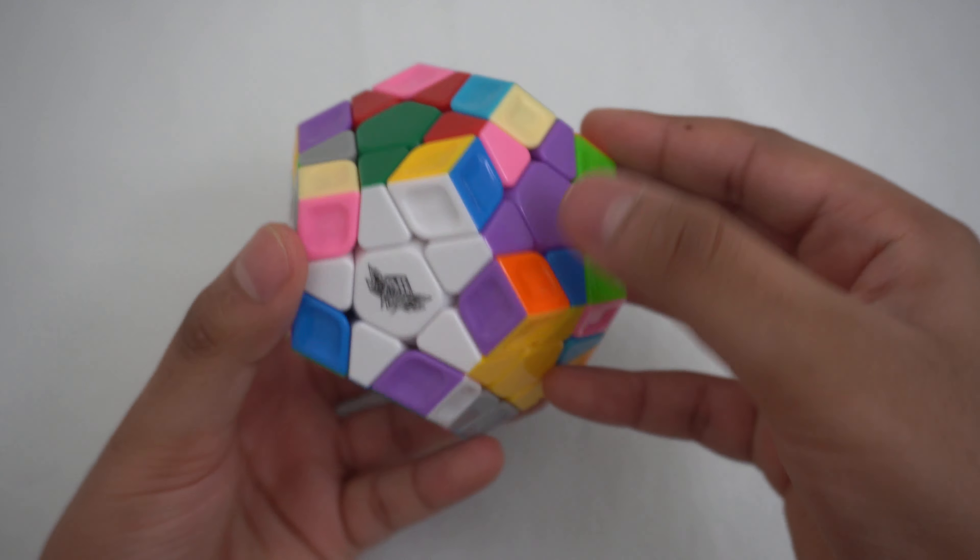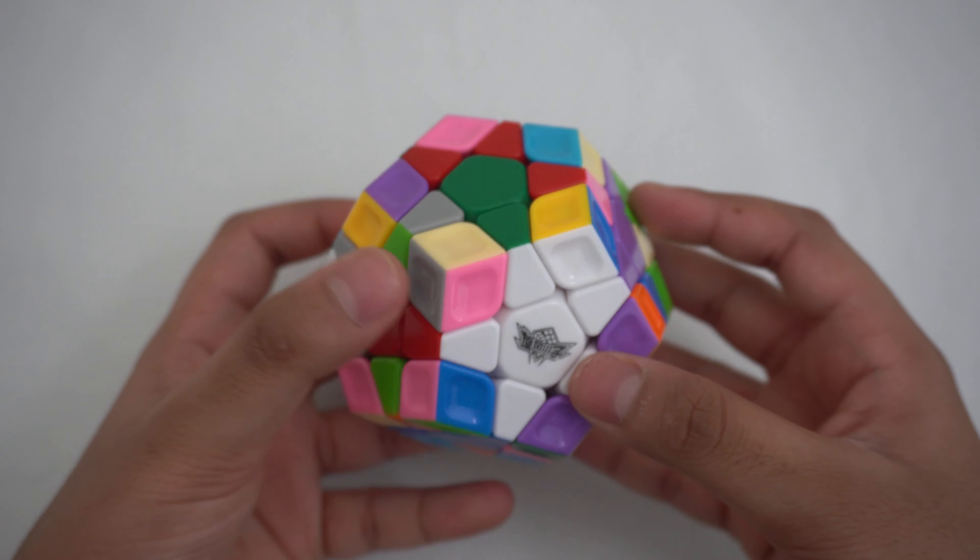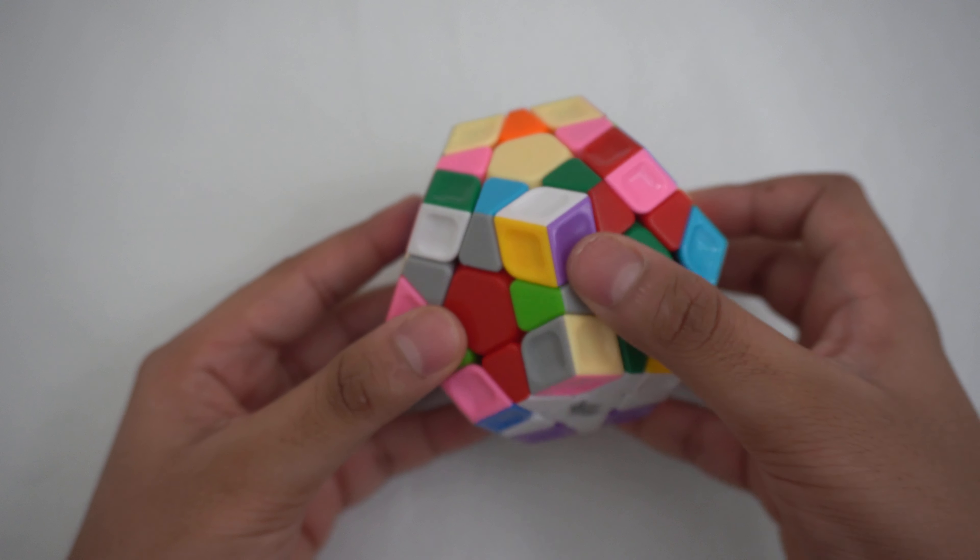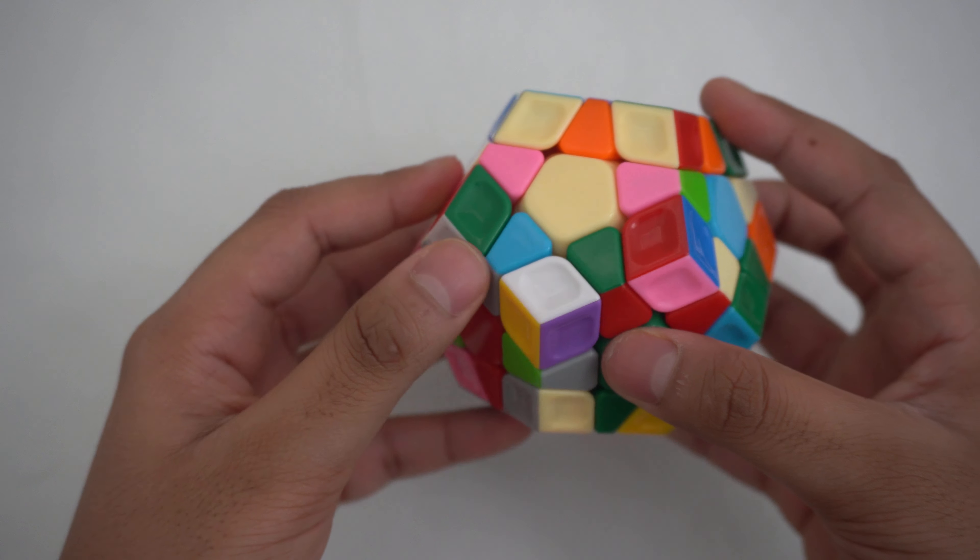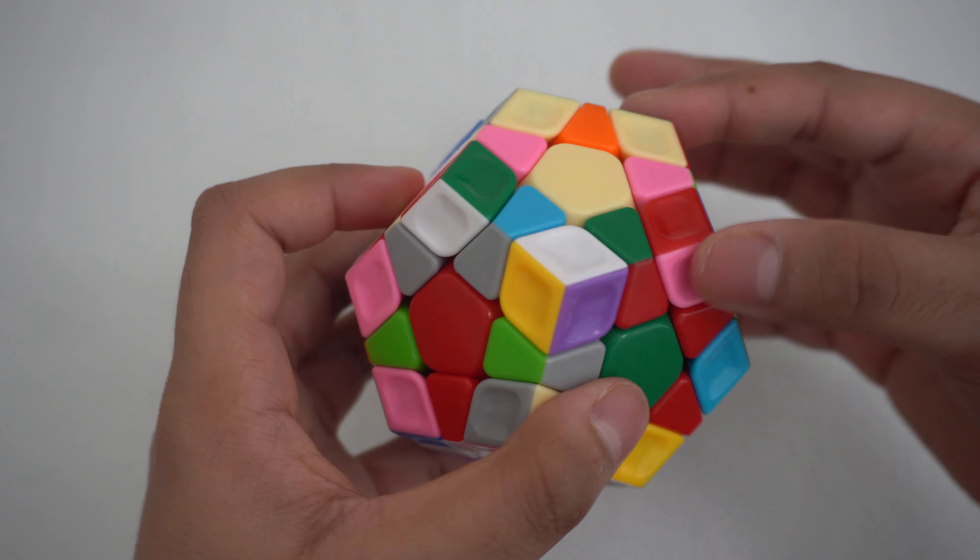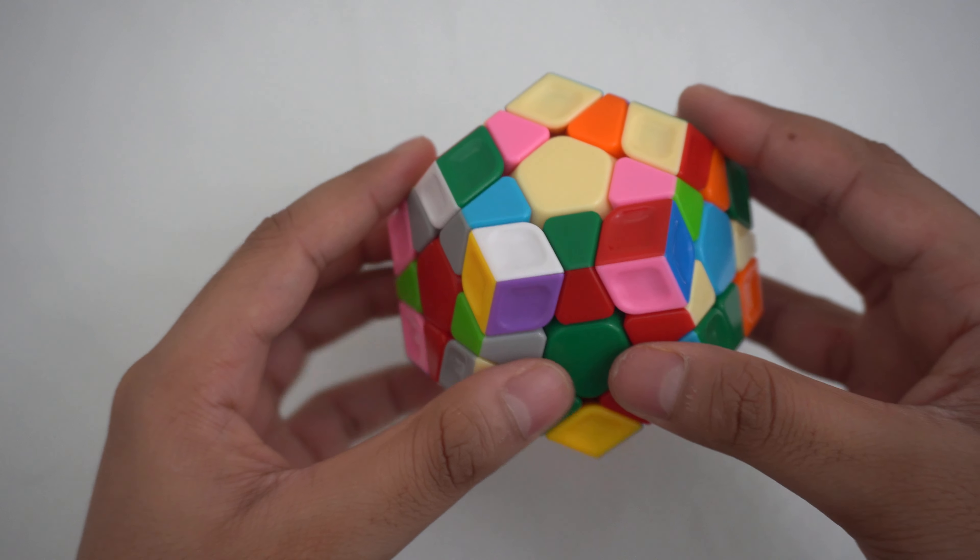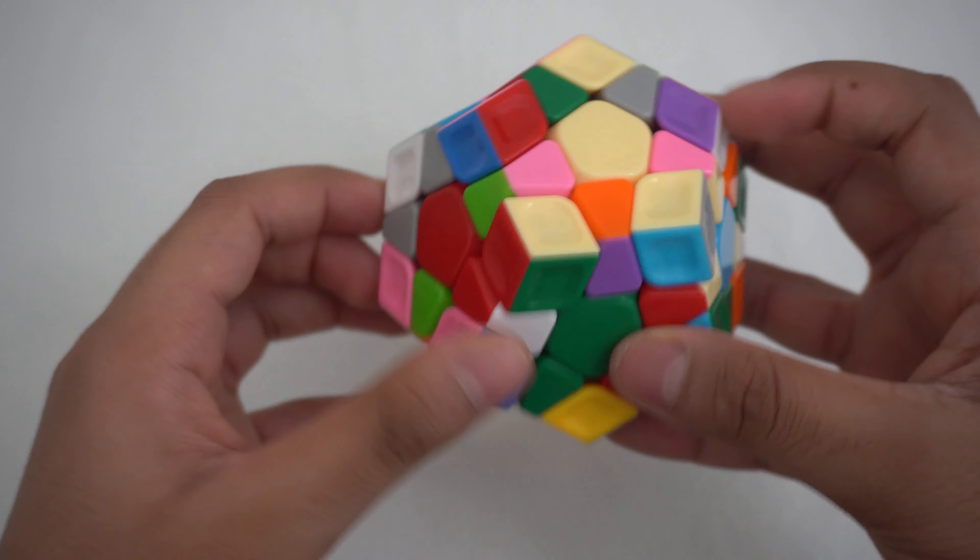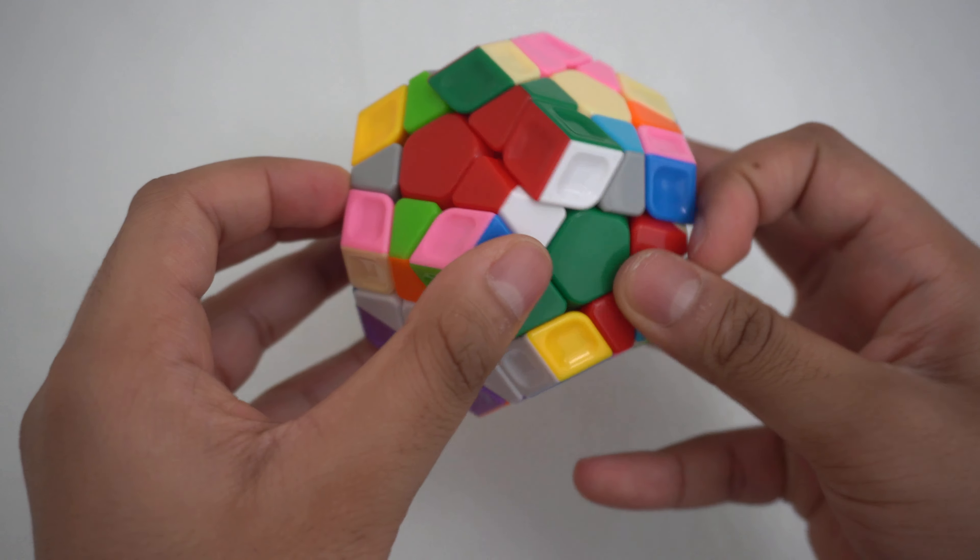The next step to solve the Megaminx is to do the first two layers for all five slots. Let's do F2L for the first one. First, put both of the edge pieces on the top so that you can insert it in and then based on how they are placed, do an algorithm to make the pair and insert it in.